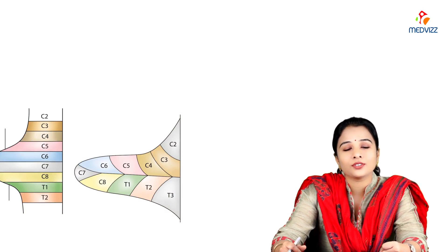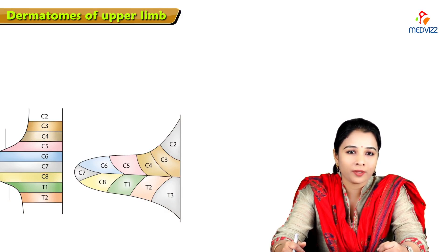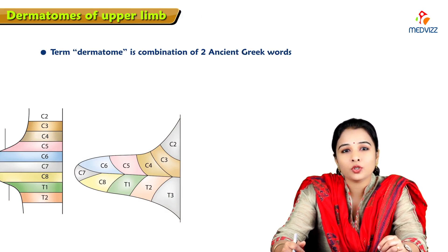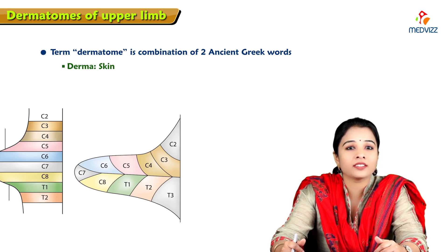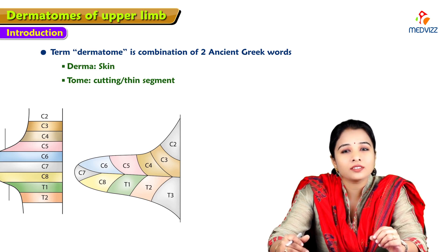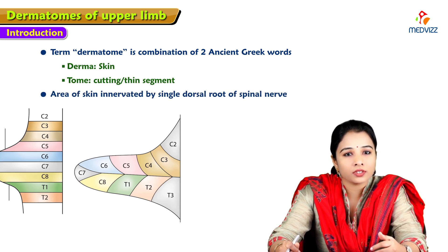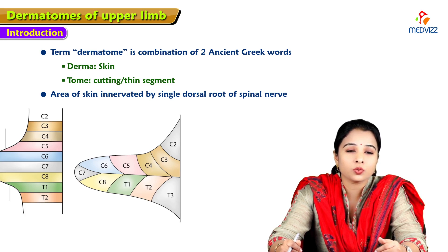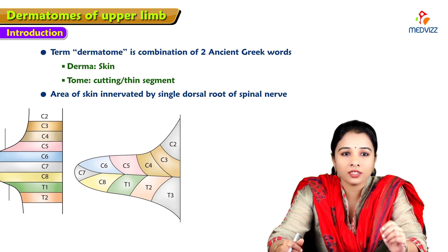Hello students, today we will start with the dermatomes of the upper limb. The term dermatome is a combination of two ancient words: 'derma' meaning skin and 'tome' meaning cutting. It is an area of skin which is innervated by a single dorsal root of a spinal nerve, which is termed as a dermatome.